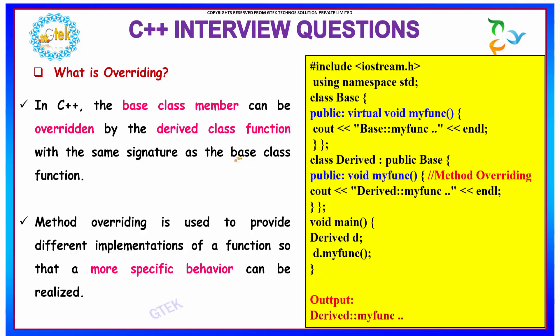What is overriding? Overriding is nothing but in C++, the base class member can be overridden by the derived class function with the same signature as that of the base class function. Method overriding is used to provide different implementations of a function so that more specific behavior can be realized.